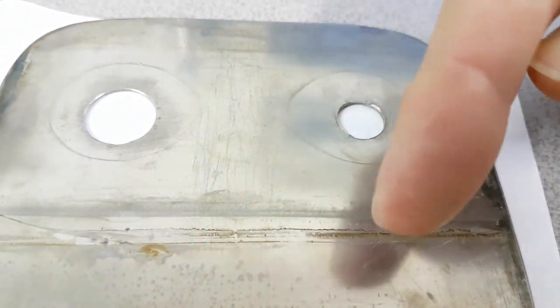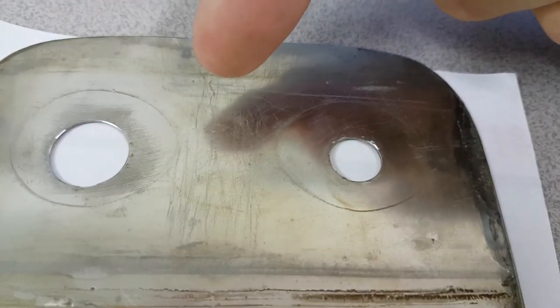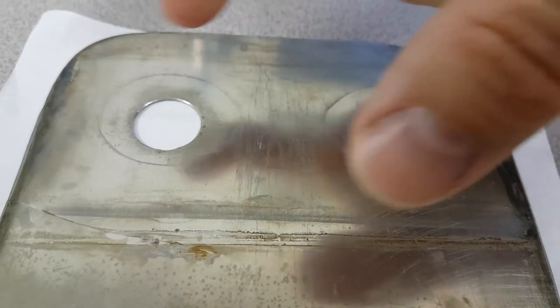This area here, between this sort of marked area and the marked area over here, is where you have the nylon sheet.